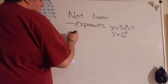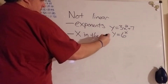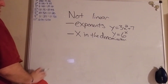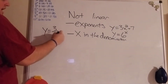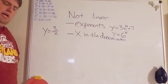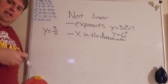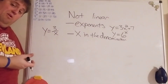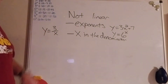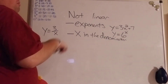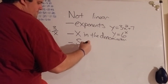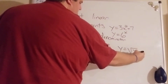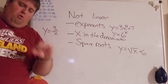The sneakiest one is x in the denominator. For example, y = 3/x is not going to be linear. If we have x on the bottom of a fraction, that makes it not linear. The third thing to watch for is square roots. If I have y = √(x + 6) — a variable under a square root — that is also going to make the equation not linear.